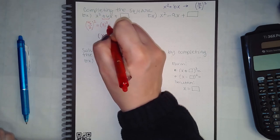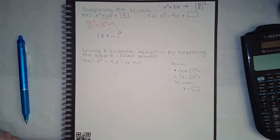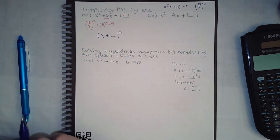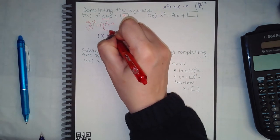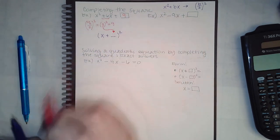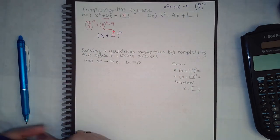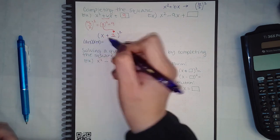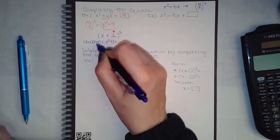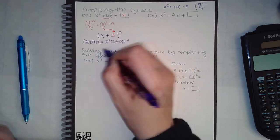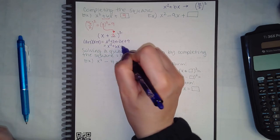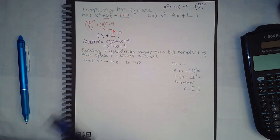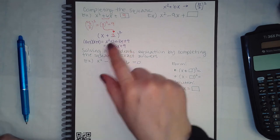For this particular case, because b is positive 6, you do 6 over 2 squared: that's 3 squared, which equals 9. So 9 is what goes in the box. To figure out what goes inside the parentheses of the perfect square, you take the number before you squared it — which is 3. Let's verify: (x+3)(x+3) = x² + 3x + 3x + 9 = x² + 6x + 9, which is exactly what we have.